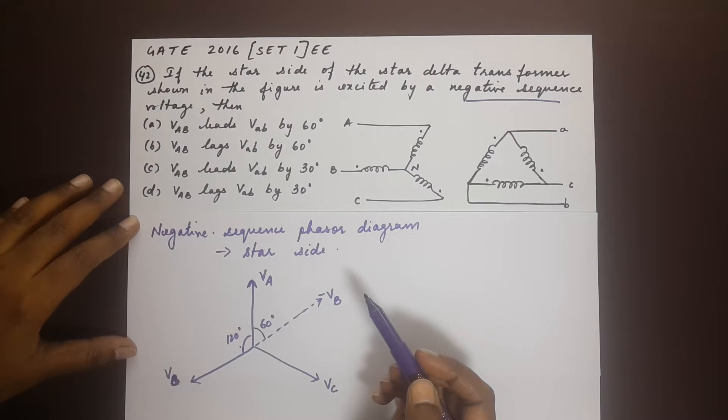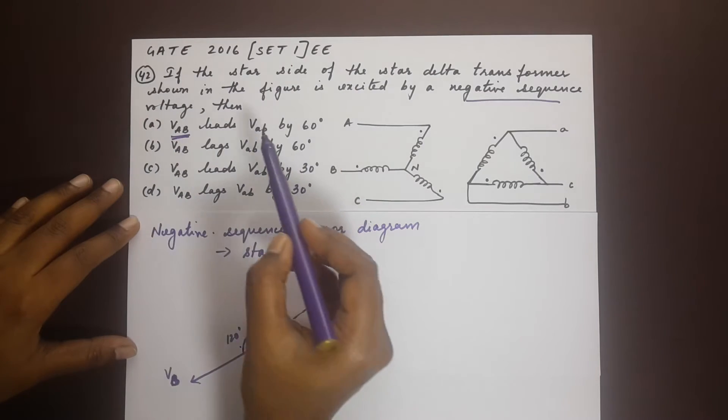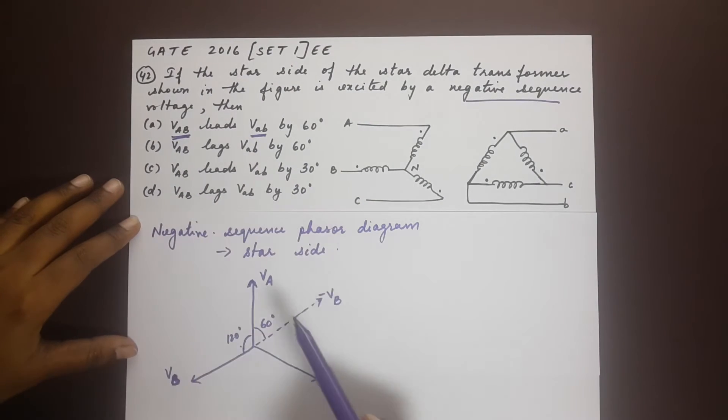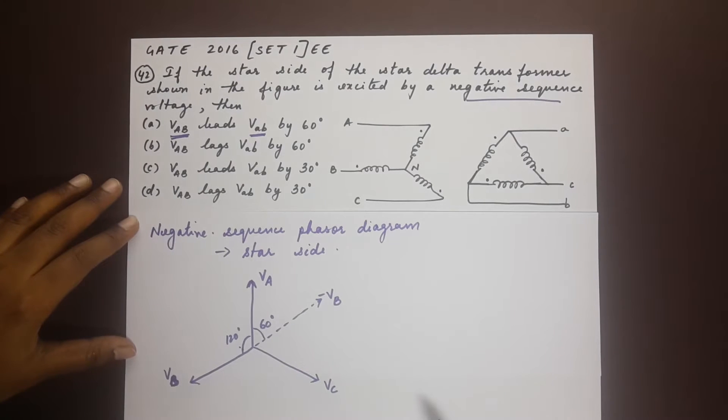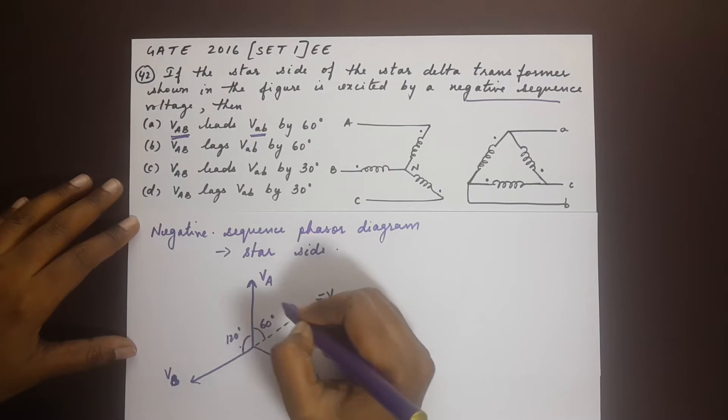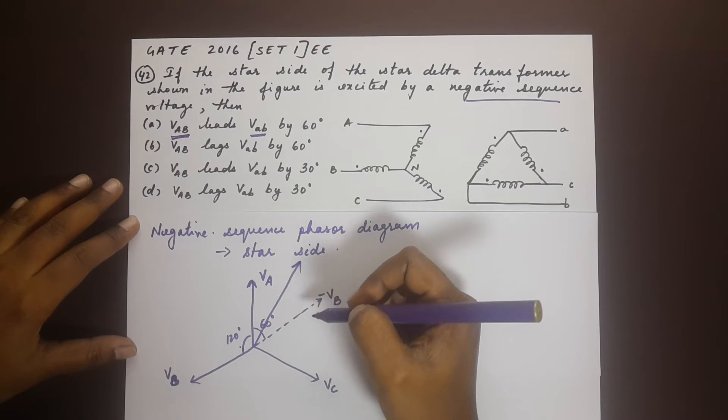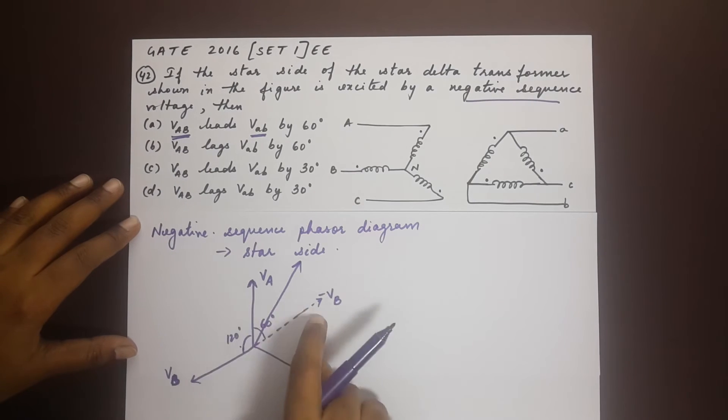Now since we are to find out VAB, we need VAB over here and we also need small vab. So let's first calculate for VAB. Now VAB would be the resultant of these two phases here, and the resultant of these two would be the phasor that goes right through the center and right through the middle of both these phasors.